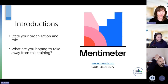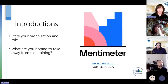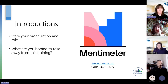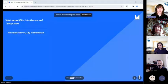Now we want to know who all of you are. We've set up a Mentimeter exercise — Mentimeter is a very easy virtual online polling system. You can go to www.menti.com. It will ask you for a code: 36616677. We'll be stepping through two questions — starting with asking you to state your organization and role, and then moving on to what you're hoping to take away from this training today.